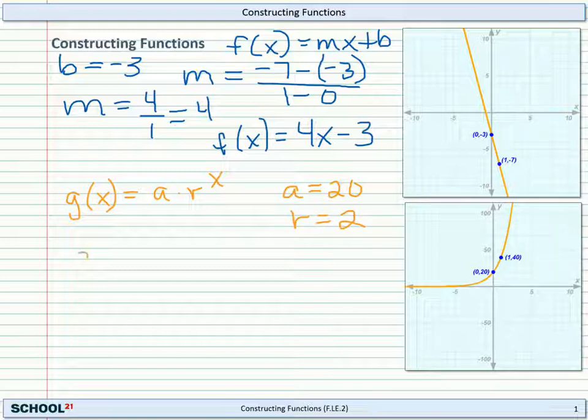And then we can put those values in for our function. g of x equals 20 times 2 to the x. And there's our exponential function.